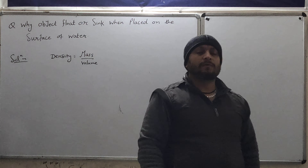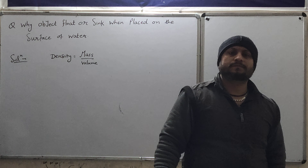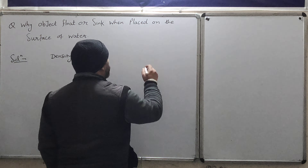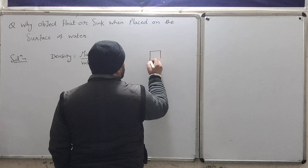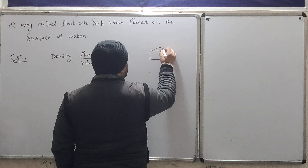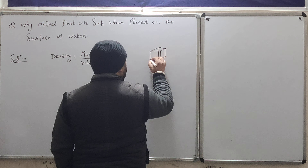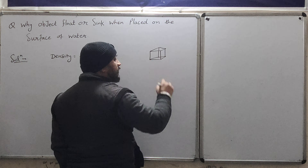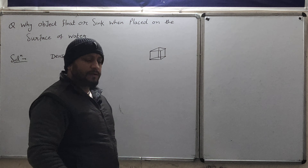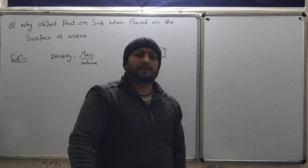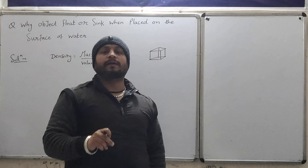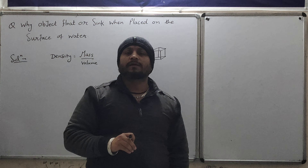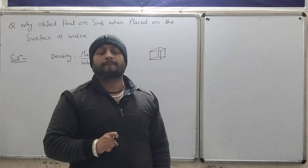So how do we know which object will float on the surface, and which object will sink in the water? To understand this, first of all we will explain a term — that is density.